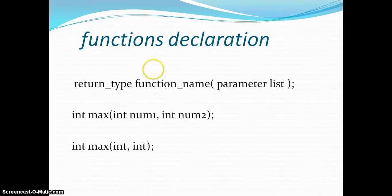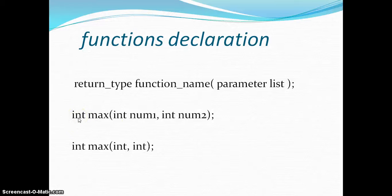Here is an example: int max. This is a function we are declaring to find the maximum of two numbers. We are giving the return type as int and passing the parameters num1, num2 of type integer. The same goes with the second example.